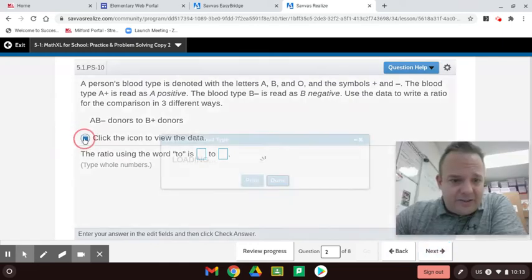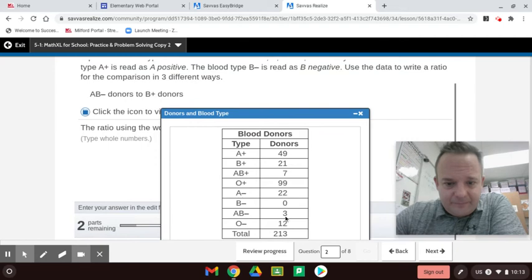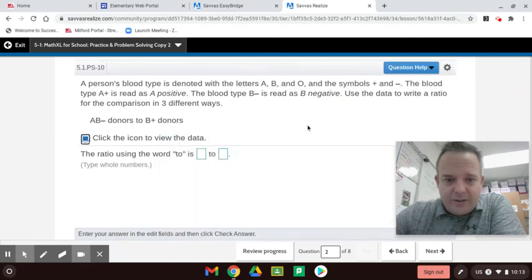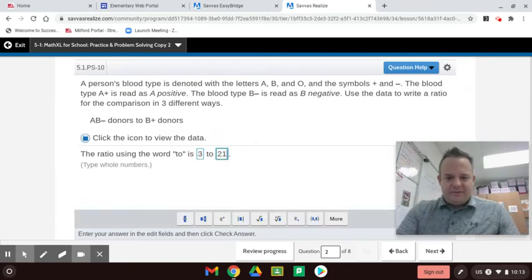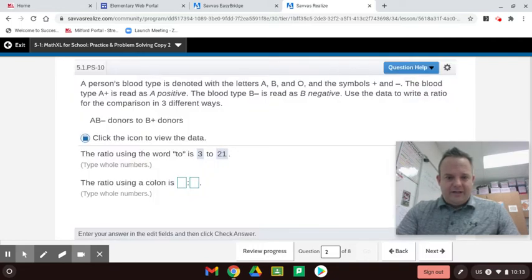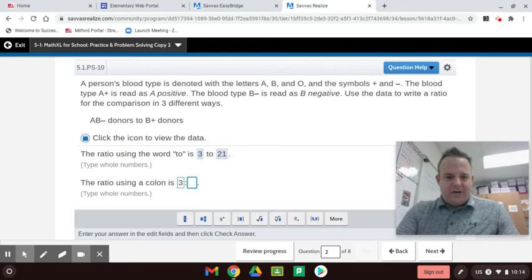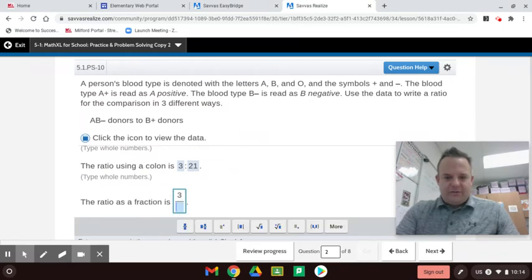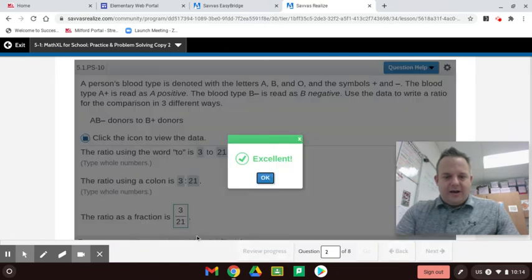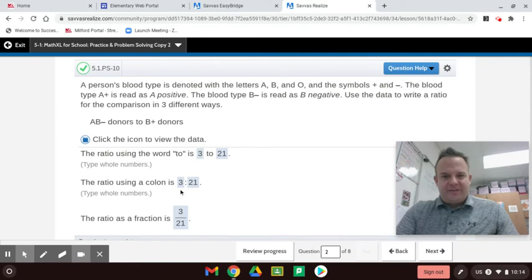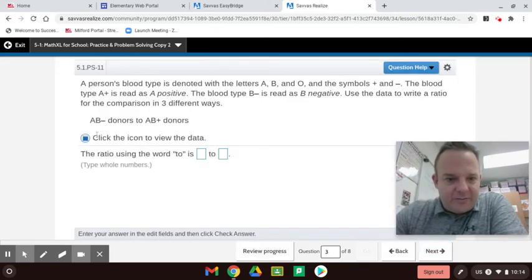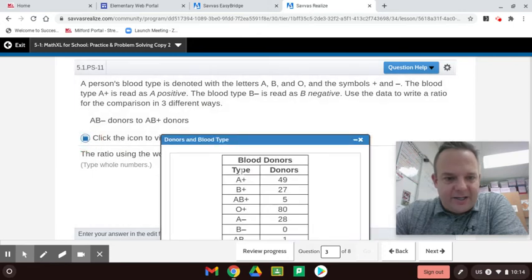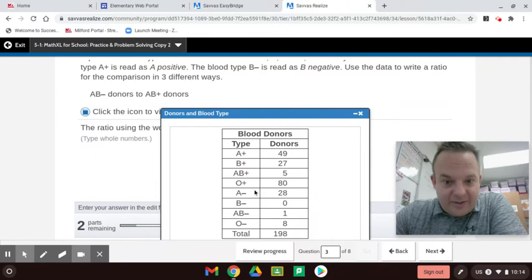So we're going to do another one. And then AB minus to B positive 3 to 21. 3 to 21 can be reduced, but they don't specify it. I'm hitting tab to go to my next box. That's a shortcut. For here, I'm hitting backslash 3 to 21. Now, you could also write 1 to 7. So 1 to 7 would also be a ratio. If there was like A, B, C, or D, they'd have 1 to 7 as one of the choices, and that might be the correct answer if they wanted in lowest terms.